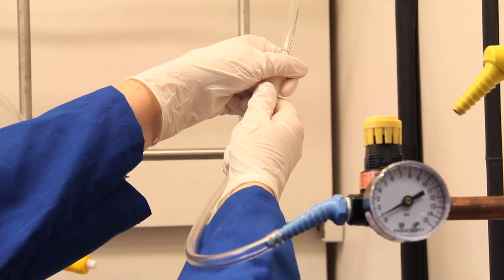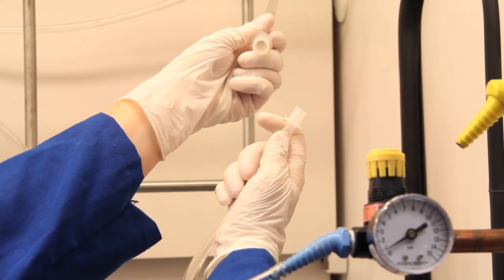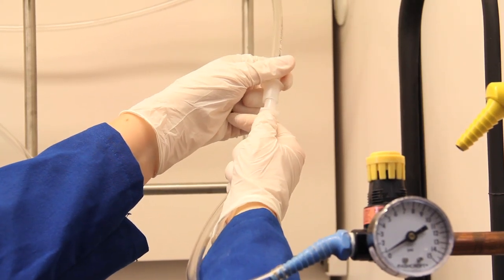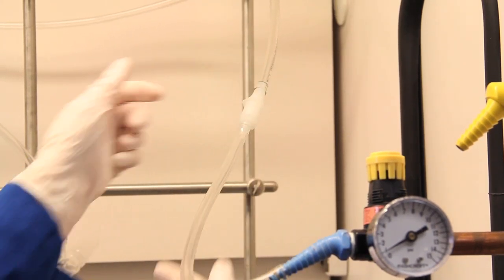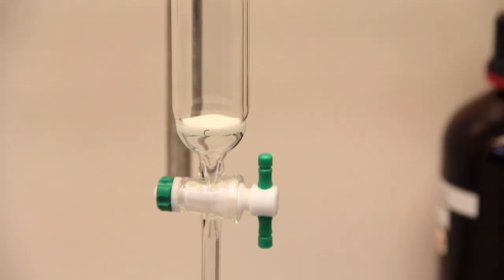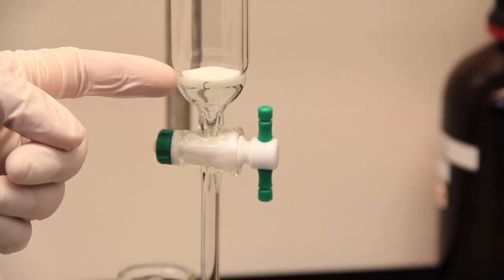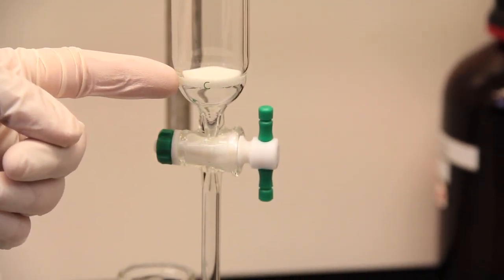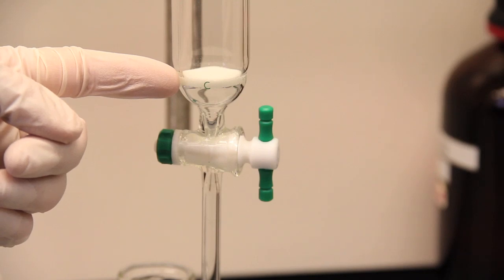For extra precaution, I added this connector to the tube. It serves as a weak point so if too much pressure develops in the column, the connector will pop. This column has a glass frit, but other columns may not have it. In that case, you need to use cotton or glass wool to plug the bottom and then pour some sand over it.